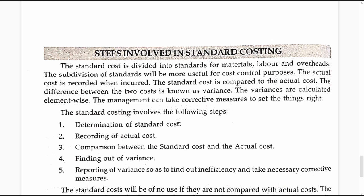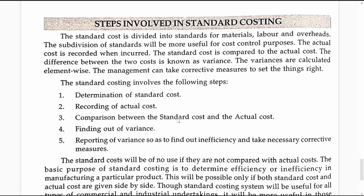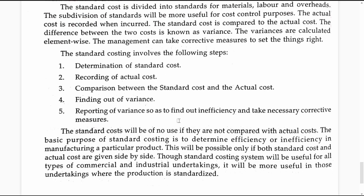The management of an organization which practices standard costing can take corrective measures to set things right. The standard costing involves the following steps: 1. Determination of standard cost. 2. Recording of actual cost. 3. Comparison of standard cost with actual cost. 4. Finding out the causes for variance. 5. Reporting the variance to management so that inefficiency of the personnel can be identified and necessary corrective measures taken to avoid such problems in future.